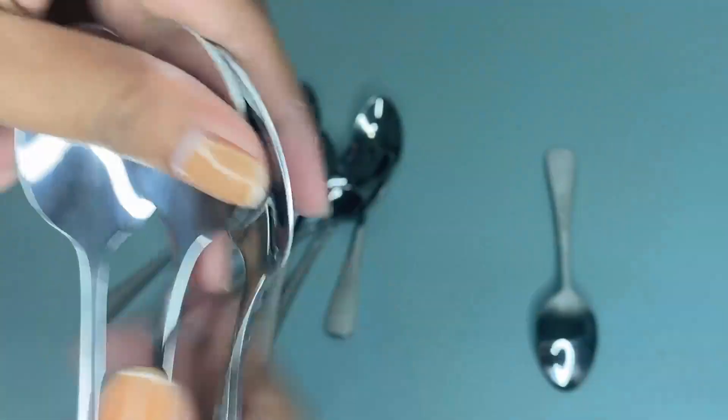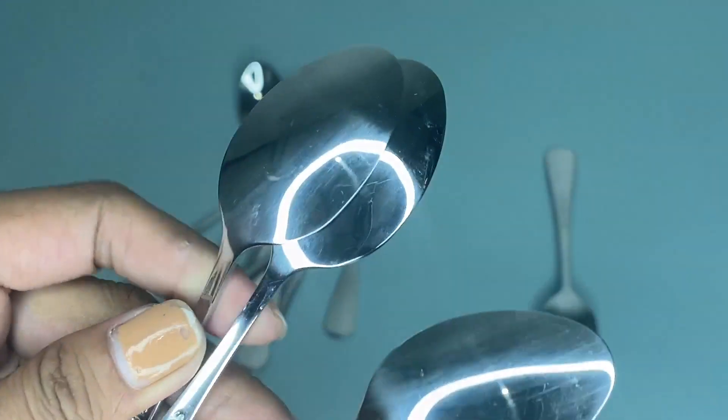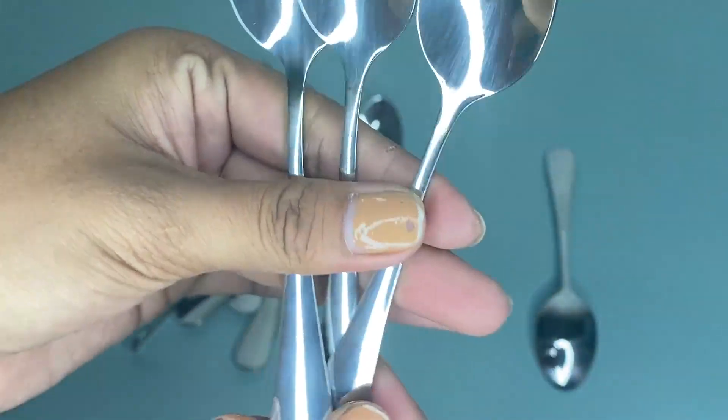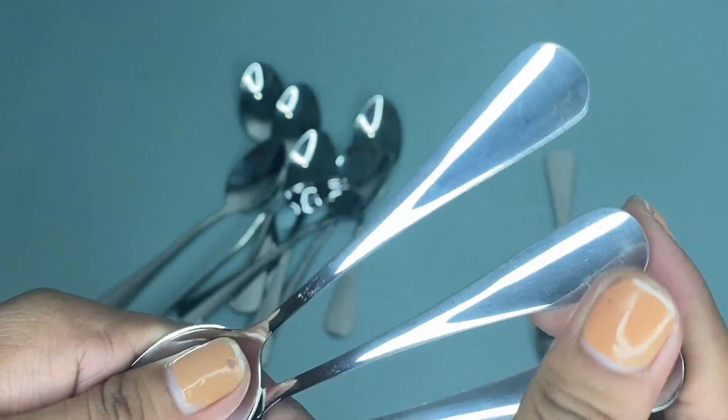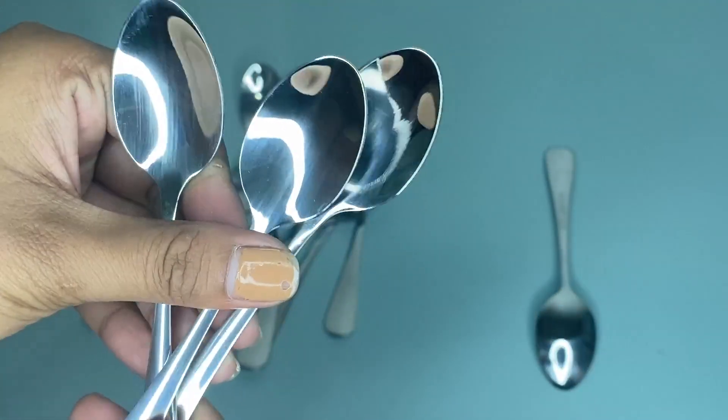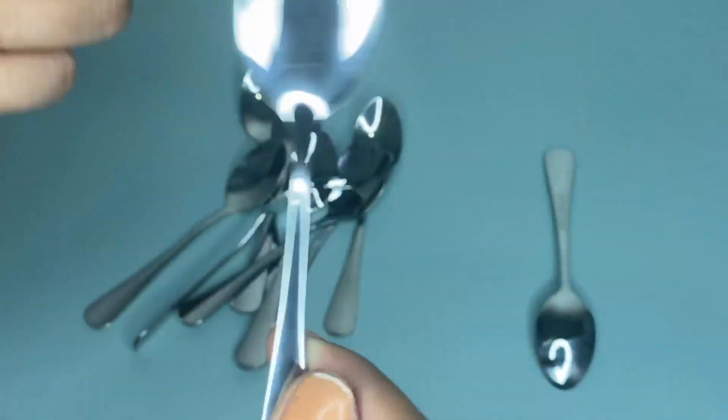These stainless steel espresso spoons are shiny and have thick metal. They are bendable and have an ergonomic handle.